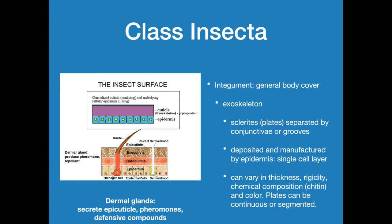The integument or general body cover of insects is that exoskeleton. The exoskeleton is made up of plates known as sclerites. They are separated by grooves or conjunctiva, and they are deposited by the dermis. The dermis is a single cell layer of epidermal cells. Their responsibility — the epidermis — is to excrete chitin that will harden with time. It is a glycoprotein and it will harden over time and create the cuticle.